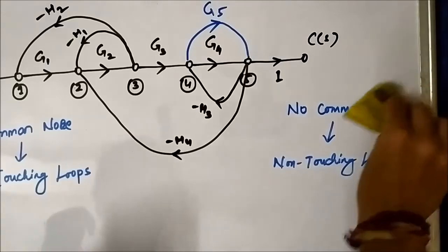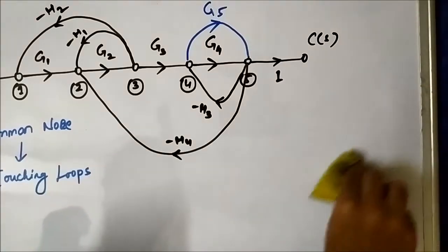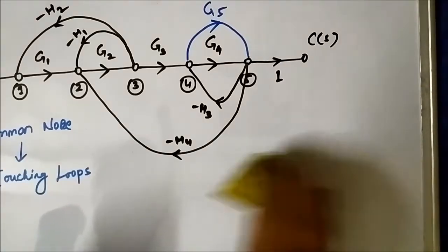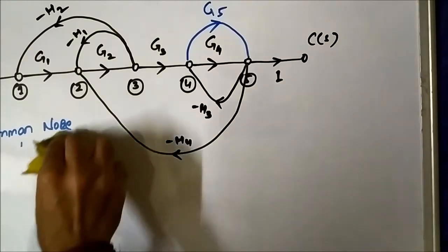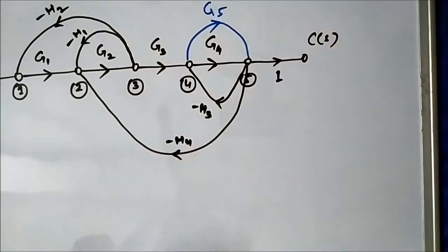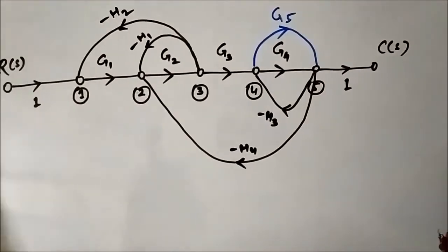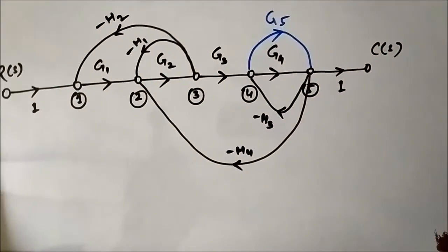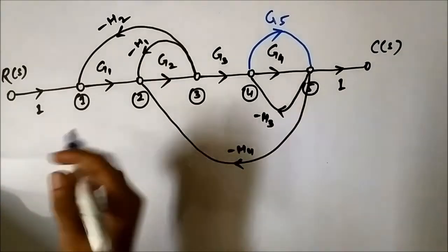Let us see whether this signal flow graph has touching loops or non-touching loops. For that, first we have to represent each and every loop in notation in the form of their nodes.